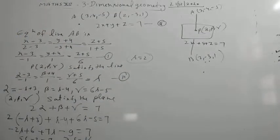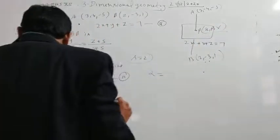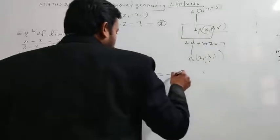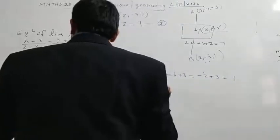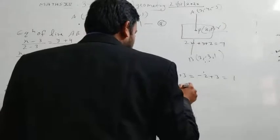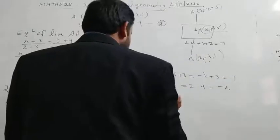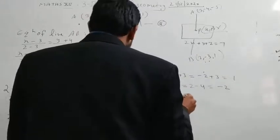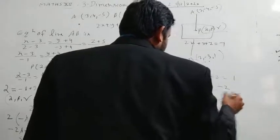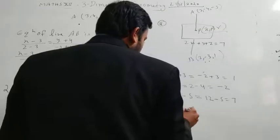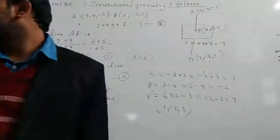With lambda = 2: alpha = minus 2 + 3 = 1, beta = 2 minus 4 = minus 2, and gamma = 6 times 2 minus 5 = 12 minus 5 = 7. So the coordinate of point P is (1, -2, 7).